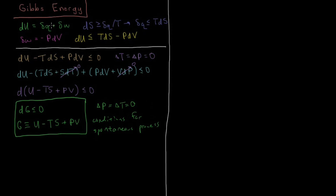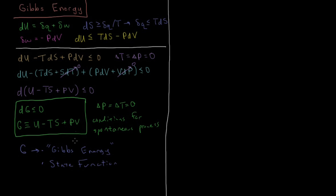ΔG is the state function we're most concerned about for spontaneous chemical reactions, because most chemical reactions are exposed to some type of temperature bath in the environment and are exposed to fairly constant pressure if open to the atmosphere. So the Gibbs energy is the real state function which tells us whether or not chemical reactions or chemical changes are going to be spontaneous under given conditions. And G is defined as u minus ts plus pv.